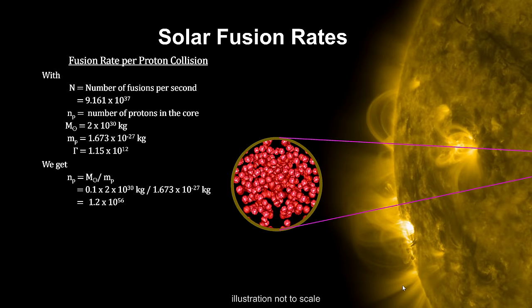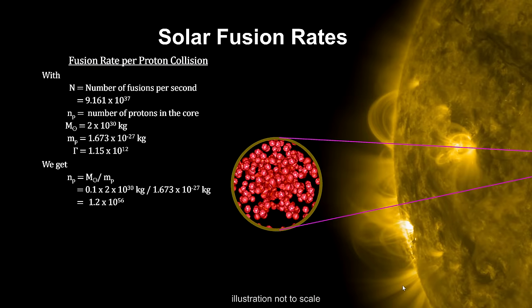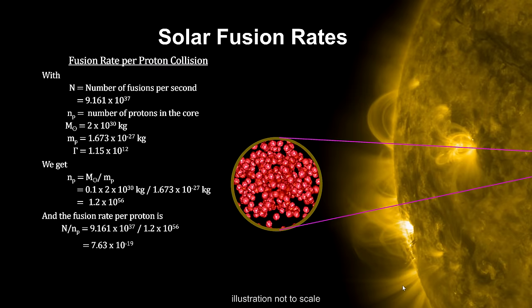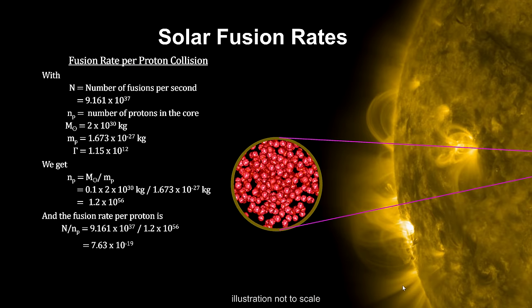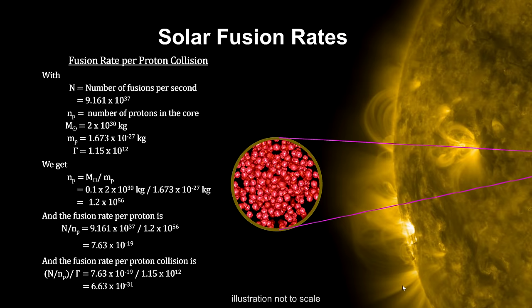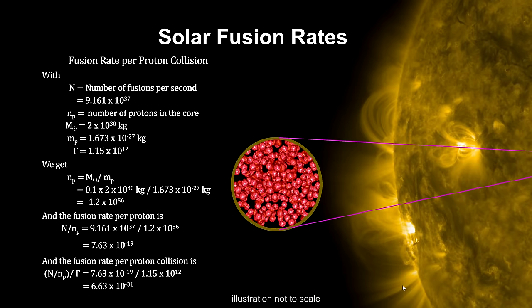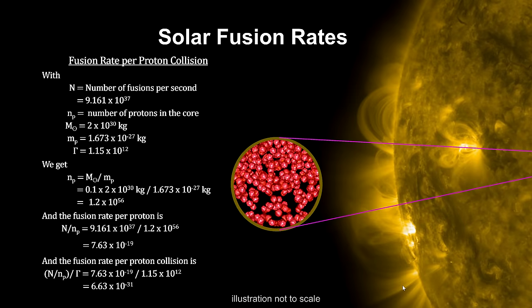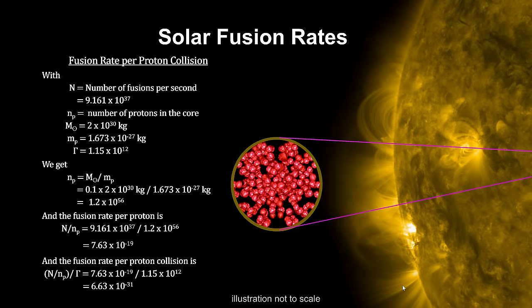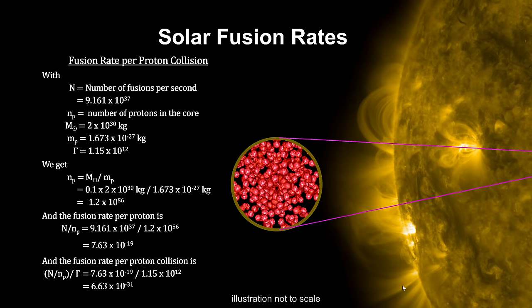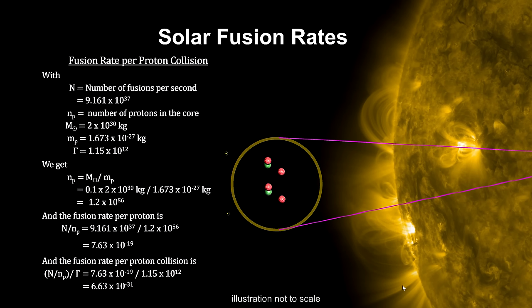We can also calculate the sun's fusion rate per proton. Dividing the mass of the sun's core by the mass of a proton gives us the number of protons in the core. Dividing the fusion rate calculated earlier by the number of protons in the core gives us the fusion rate per proton. And if we divide this by the trillion collisions per second, we get the number of fusions per collision. We see that the probability that any particular collision will result in a fusion is extremely small. That's why a proton's trillion collisions per second can go on for billions of years before one of them results in a fusion event.